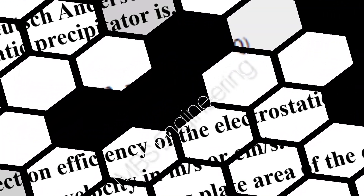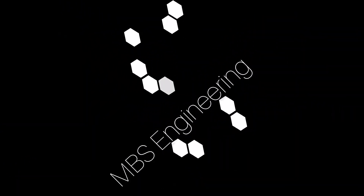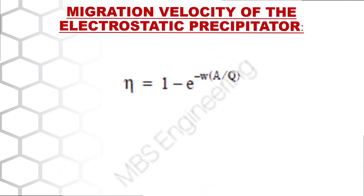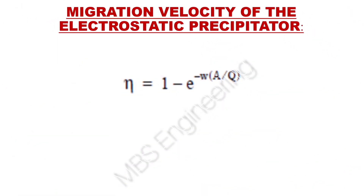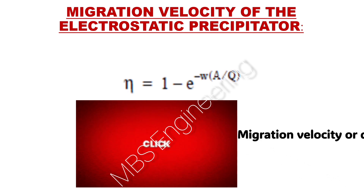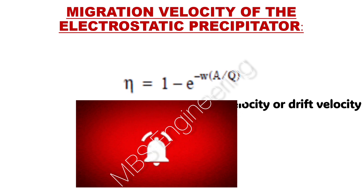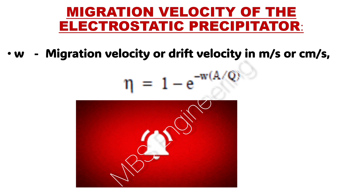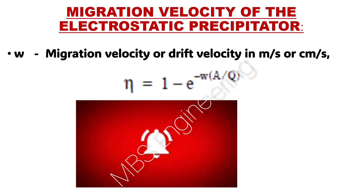We are going to understand how to calculate the migration velocity or drift velocity of the electrostatic precipitator. Using the Deutsch-Andersen equation: collection efficiency eta equals 1 minus e to the power of migration velocity multiplied by the effective collecting plate area divided by gas flow through the electrostatic precipitator.